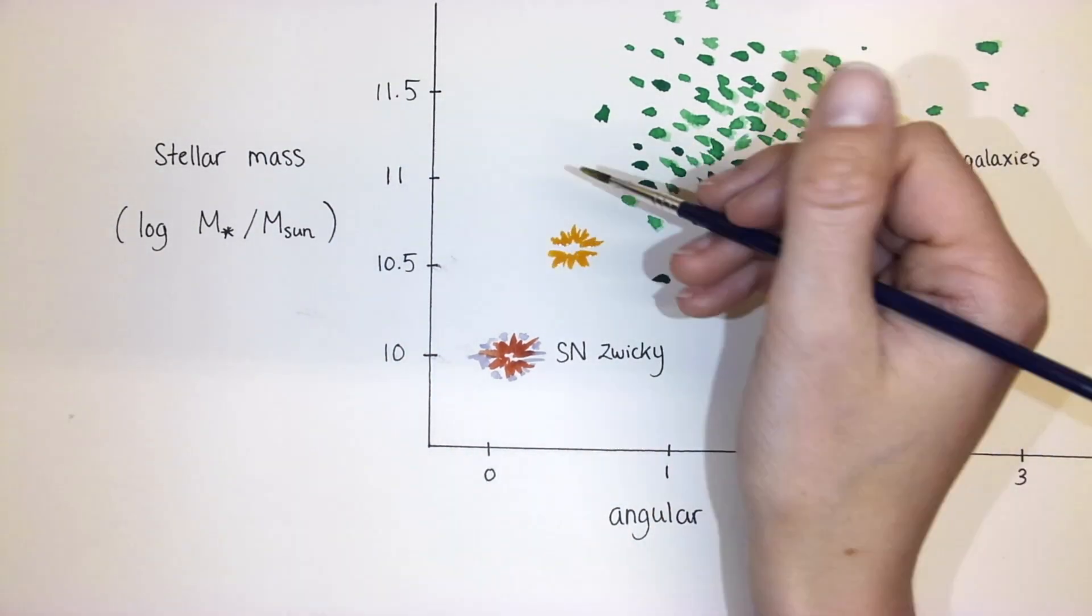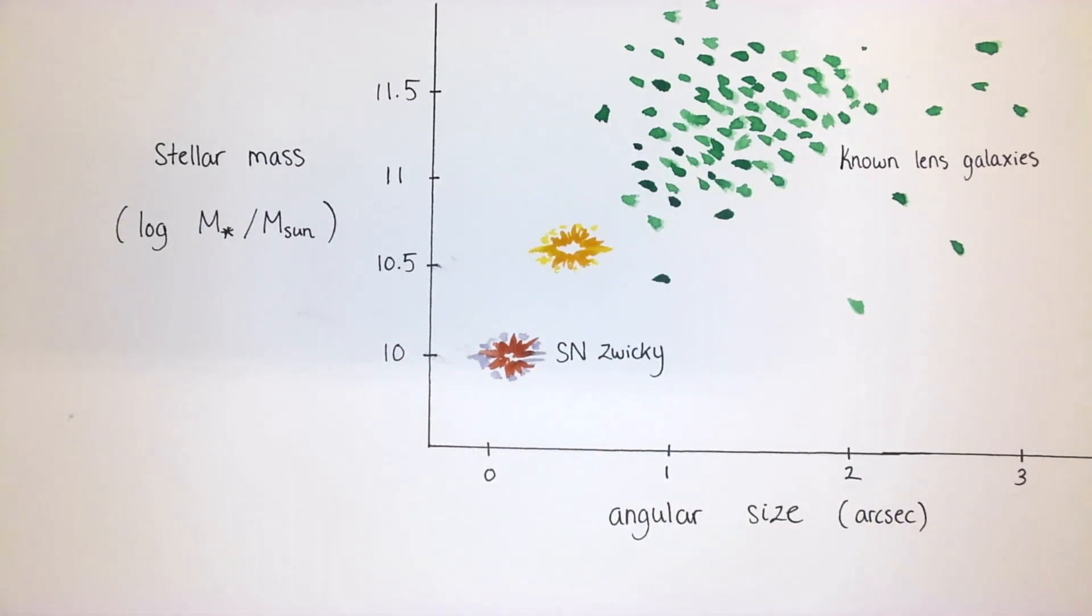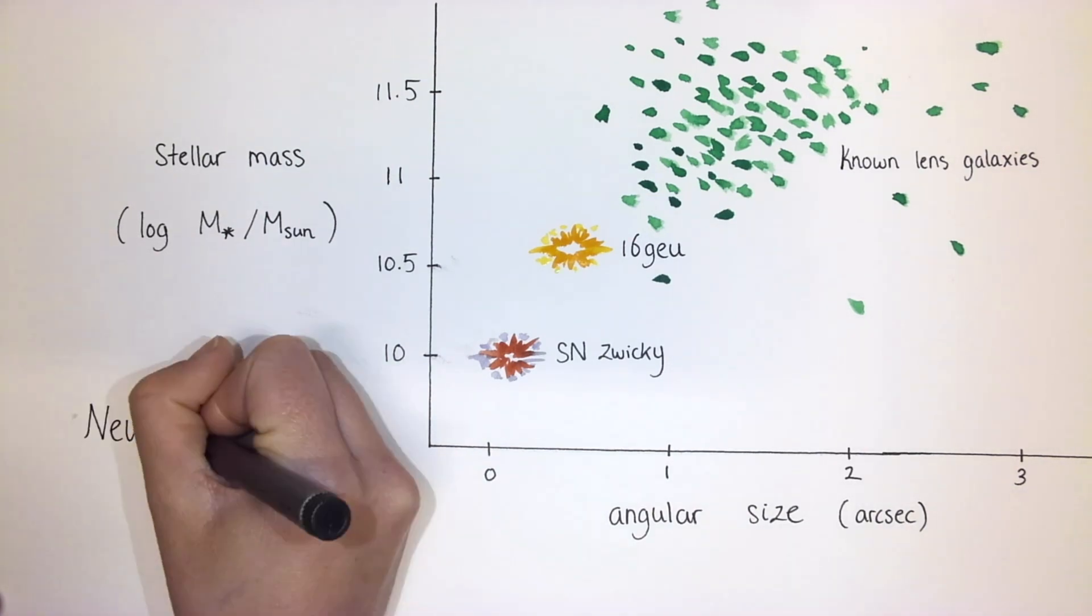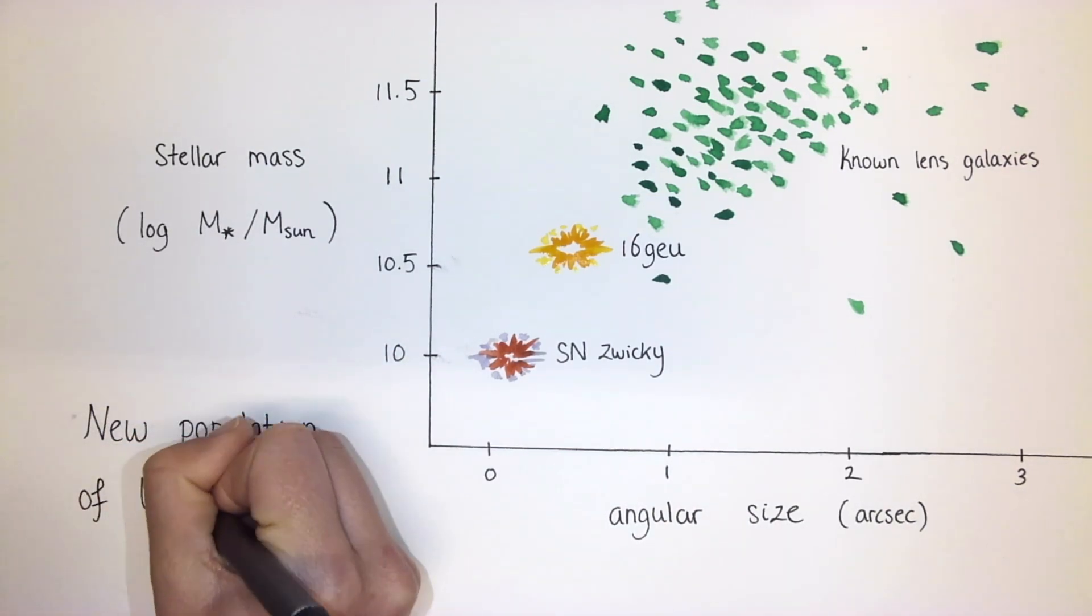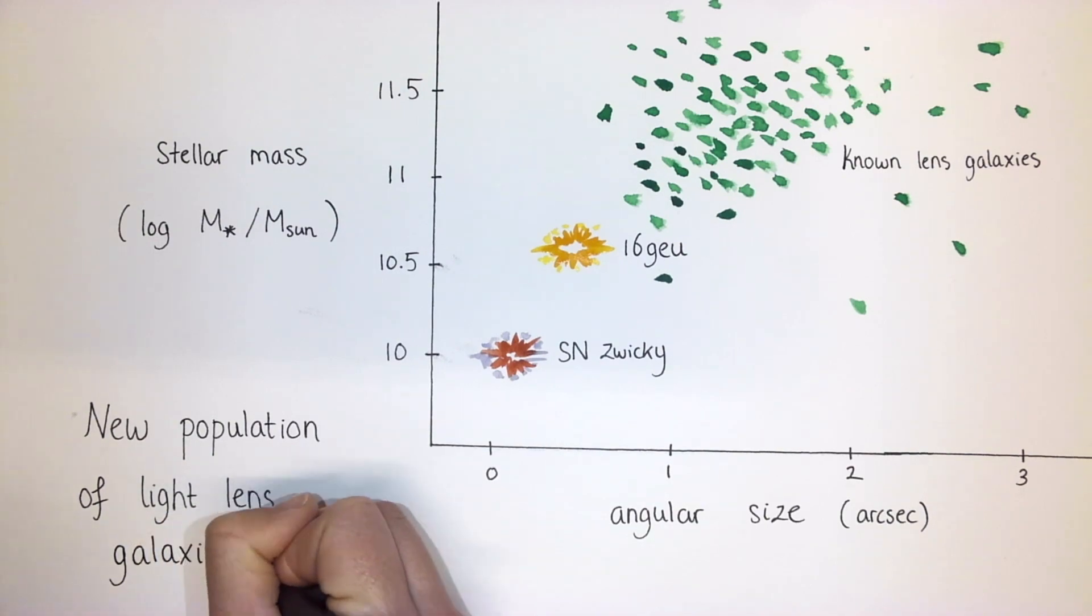There's one other known supernova lens by a single galaxy, SN 16Geu. And when we add 16Geu to the diagram, we see that these lensed standard candles allow us to uncover a new population of light and small lens galaxies.